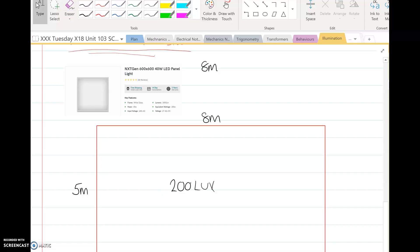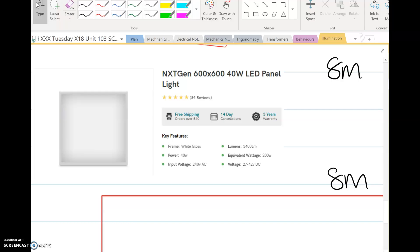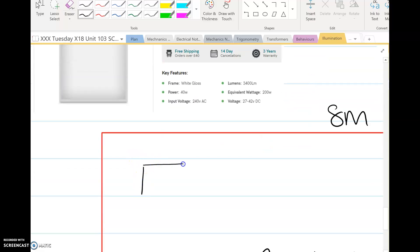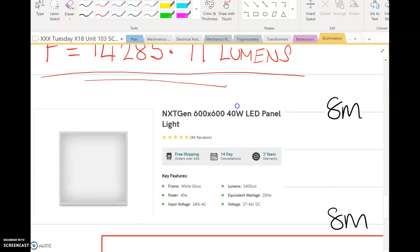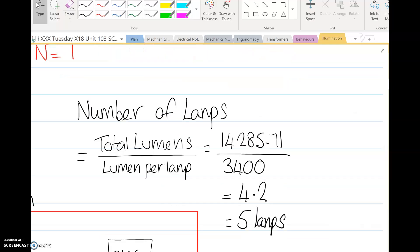So the question is, what sort of lamps are we going to fit? Well, I've just gone online. Let's say this was an office area, and you can see the power for each light is 40 watts. I've just searched for a 600 by 600 LED panel light. It's giving out lumens of 3,400, so one panel light is going to give out 3,400 lumens. How many lights do we need? Well, we divide 3,400 lumens into 14,285.7. So number of lamps is the total lumens required divided by the lumens per lamp. Our LED light, 3,400 lumens per lamp, divide the two, we get 4.2. Obviously you can't get 4.2 lamps, so that's five lamps.